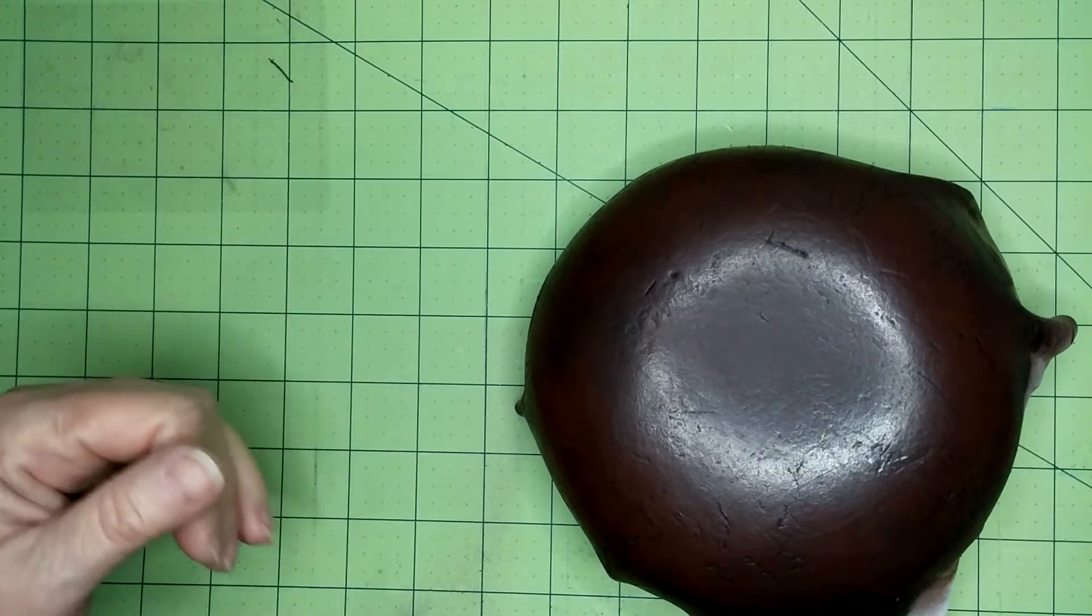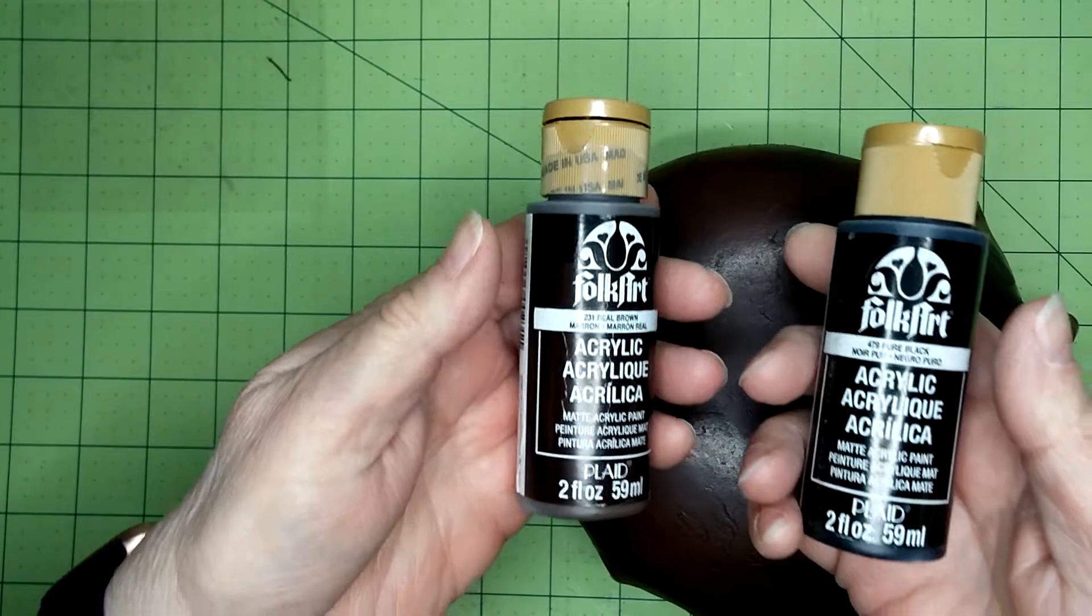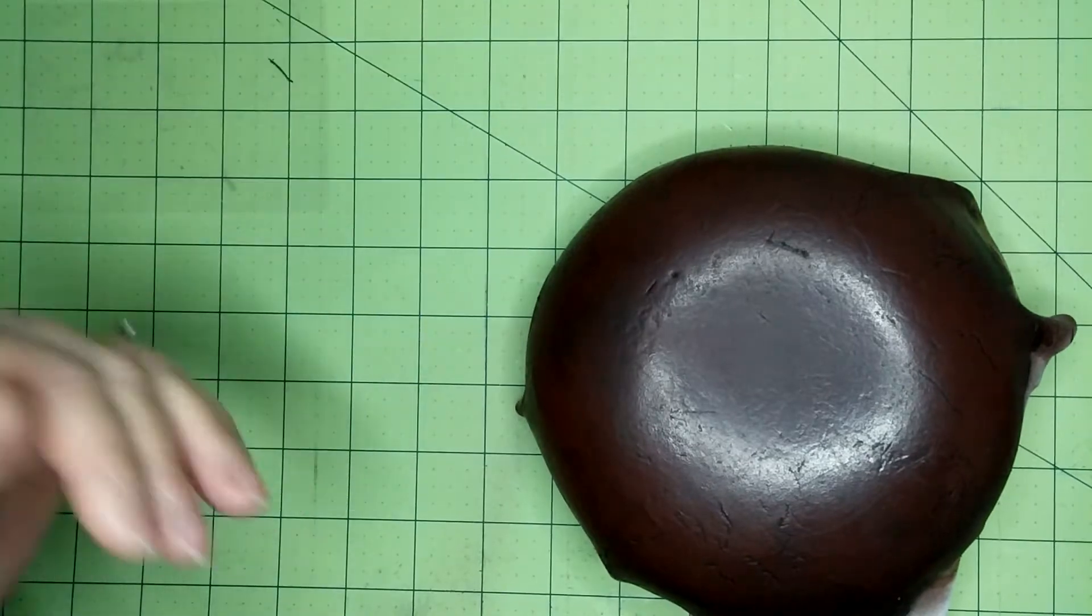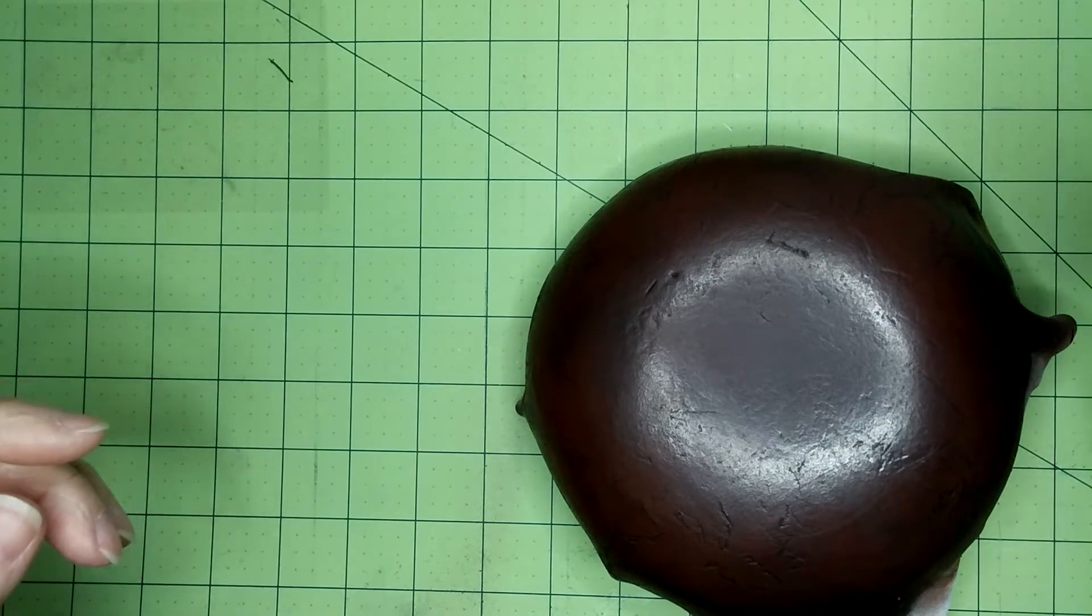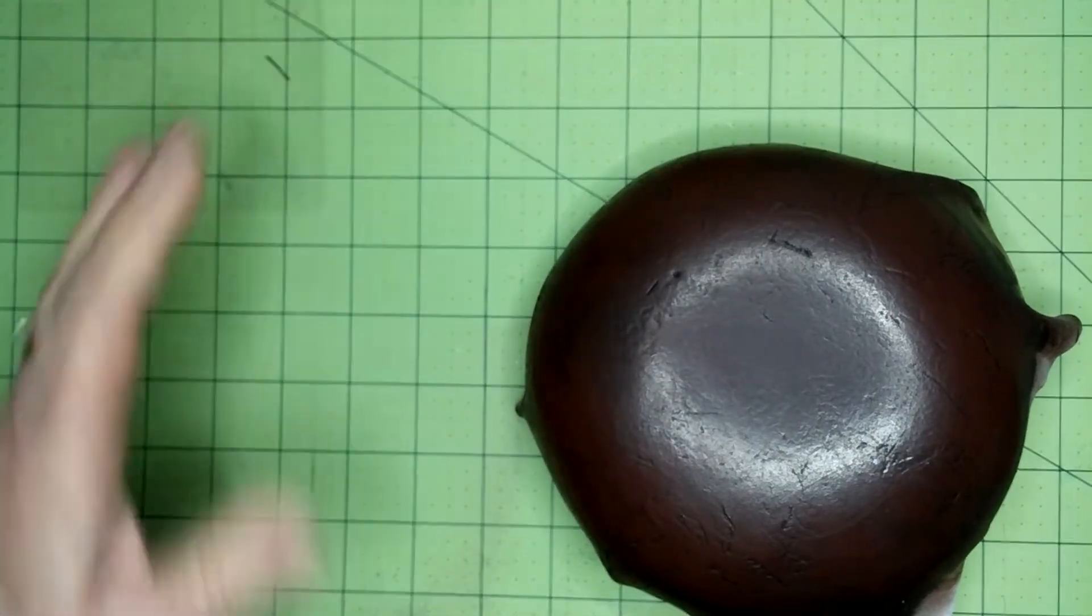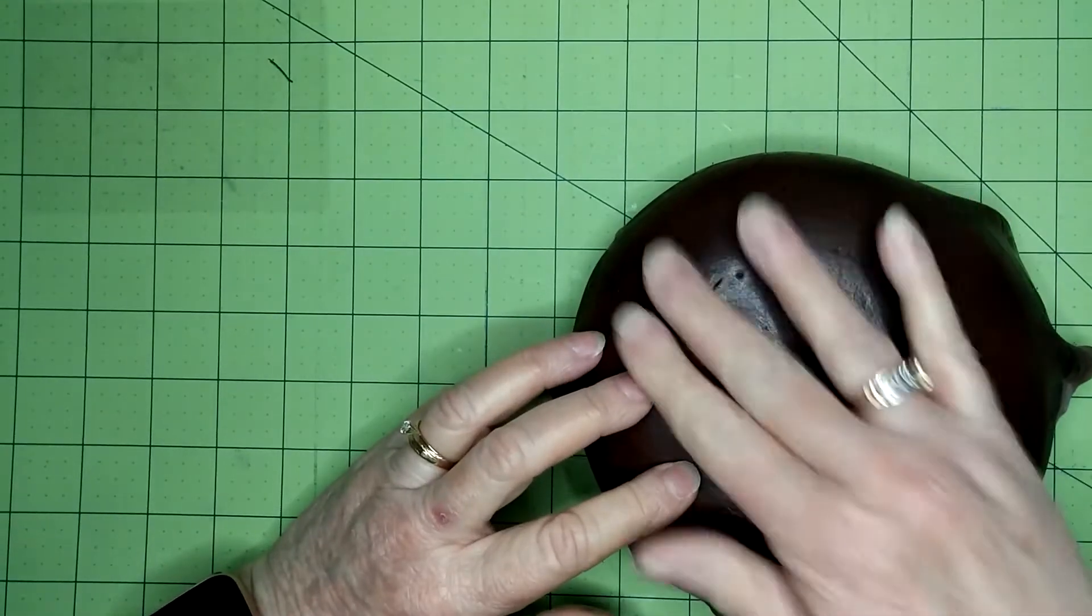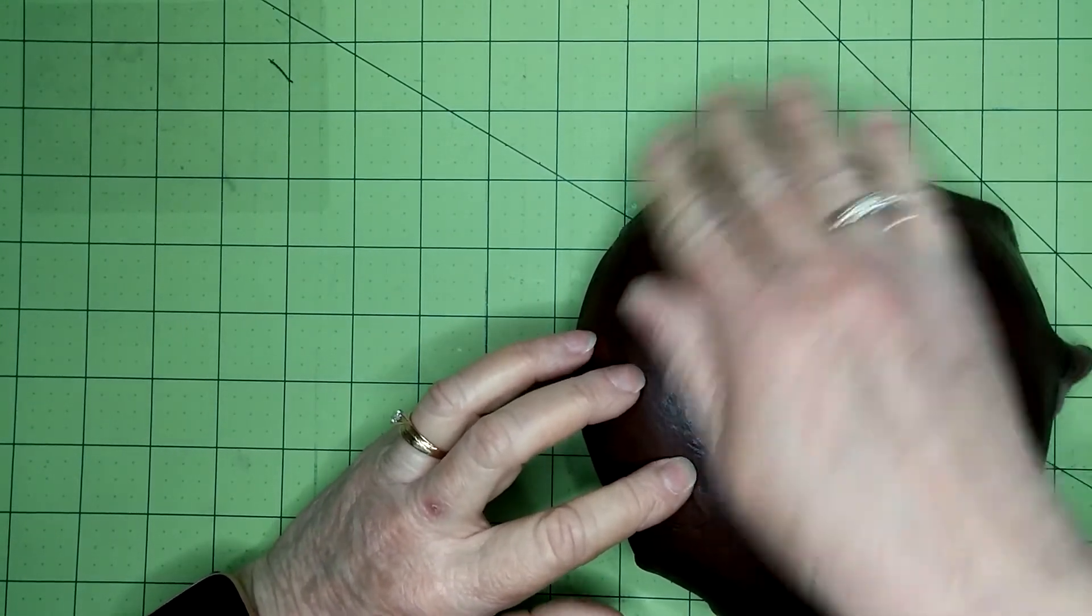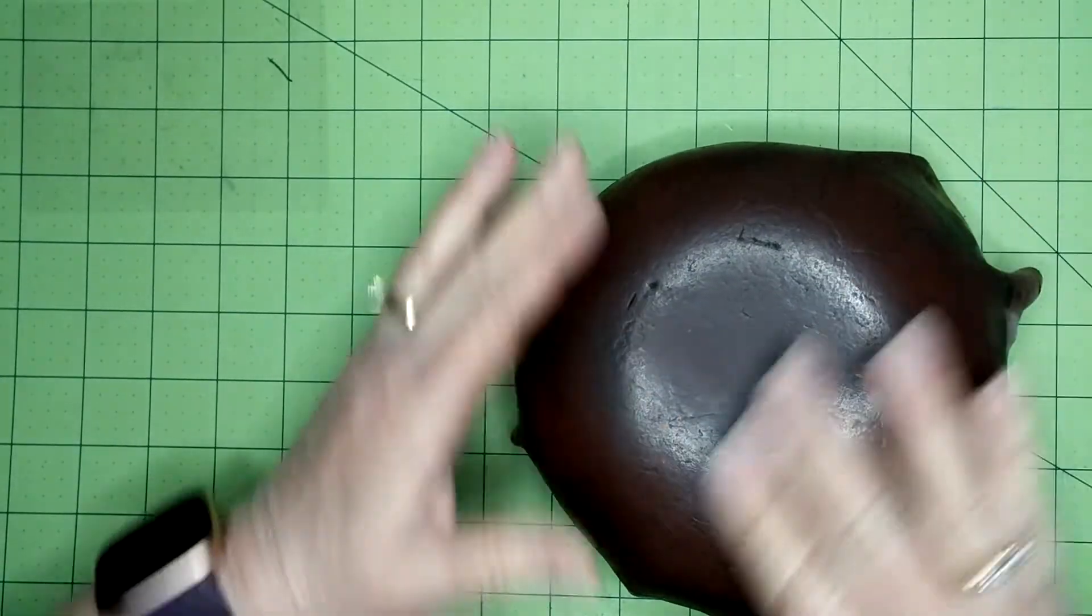I used some acrylic paints I bought at Michael's. They're inexpensive. I diluted them with a little bit of water to make it easier to work with. I have a pure black and a real brown. I worked some in with a cosmetic piece of foam, working it in really good, and then wiped the excess off with a paper towel.